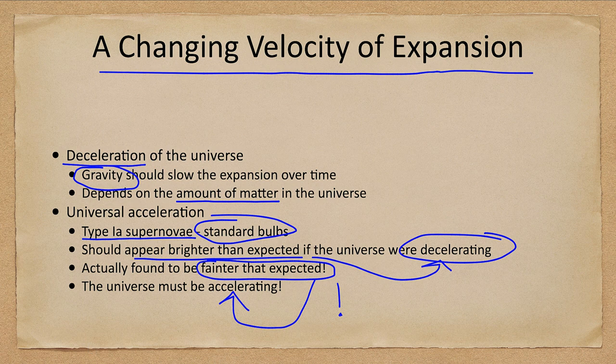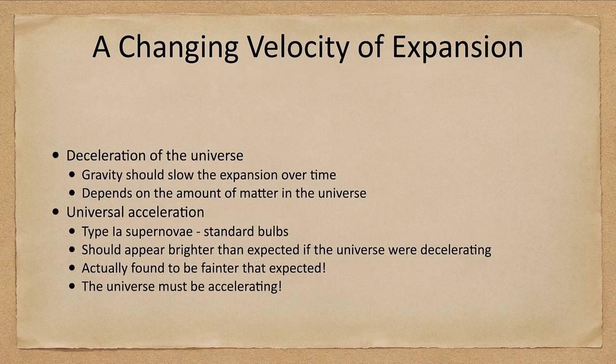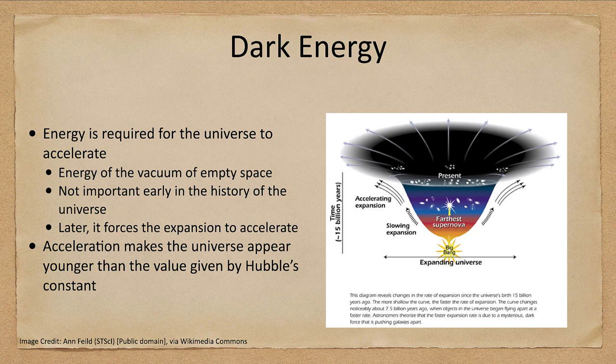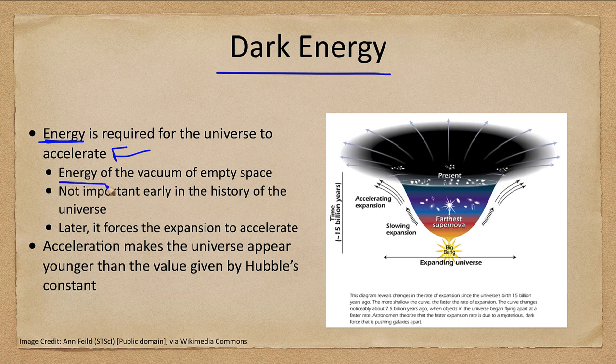So what can be at work here to overwhelm gravity? Gravity has to slow things down. Gravity never is a repulsive force. So it always slows things down. What else could be involved? We come to the concept we call dark energy. Energy, some kind of energy is required for the universe to accelerate. This becomes the energy of the vacuum of space. It really was not important early on when the universe was first forming.